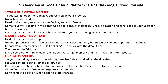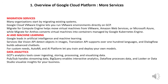Shared core options are cheapest, while Standard, High Memory, and High CPU offer more resources. Set your boot disk, select an operating system like Debian, and adjust the disk size. For web servers, open HTTP and HTTPS ports. Consider preemptible instances for big savings, but remember they can be stopped at any time. When finished, click Create and explore your new VM — don't forget to delete it when done to avoid charges.